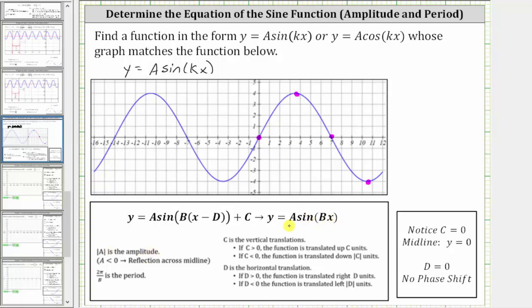The absolute value of a is the amplitude, and b, or in our case k, is found by determining the period and saying the period equals two pi divided by k.